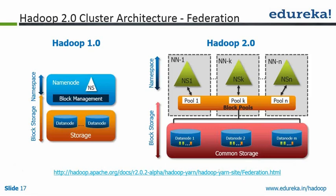The second limitation is that after you scale to a certain limit — after you scale to 5000 nodes — you run into a vertical limit on the NameNode, and that is why you will need multiple NameNodes. That was one problem in Hadoop 1.0. So in Hadoop 2.0, what has happened is that we have created a federation of NameNodes.